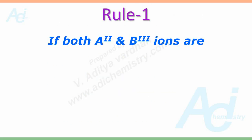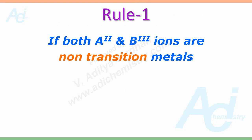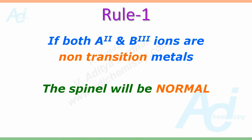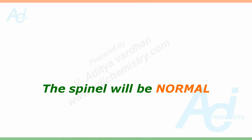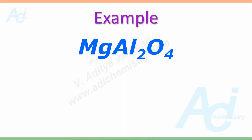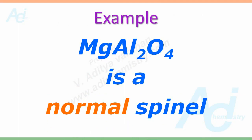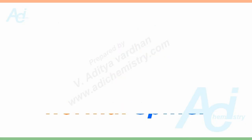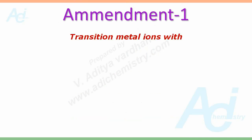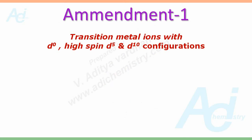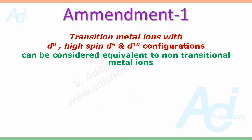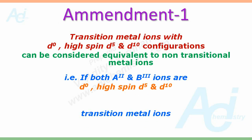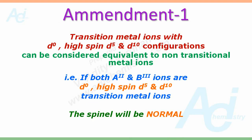Rule number one: if both divalent and trivalent ions are non-transitional metals, then the spinel will be normal. The best example is MgAl2O4, which itself is known as spinel — it is a normal spinel because both magnesium and aluminum are non-transitional metals. One amendment: transition metal ions with D0, high spin D5, and D10 configurations can be considered equivalent to non-transitional metal ions. So if both A2+ and B3+ ions have D0, high spin D5, or D10 configurations, the spinel will be normal.